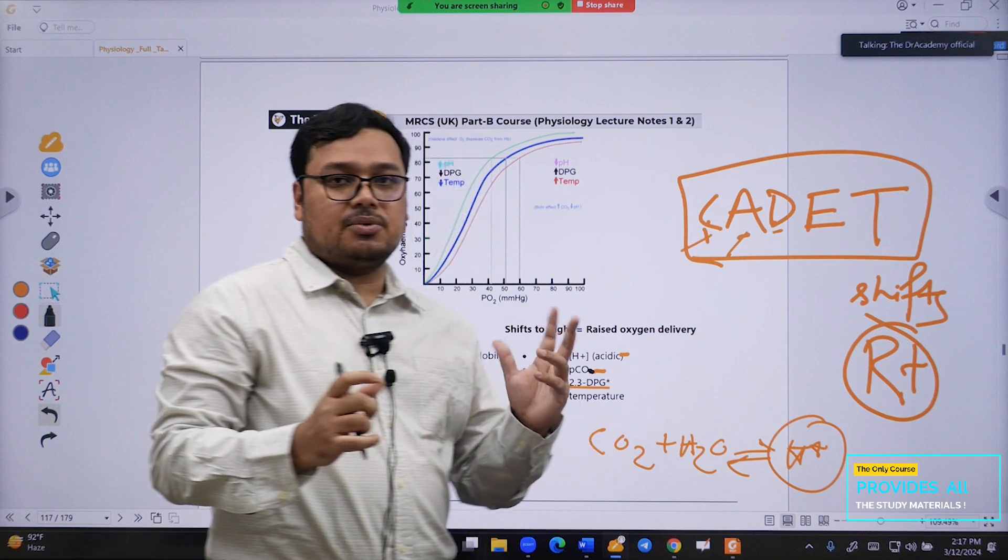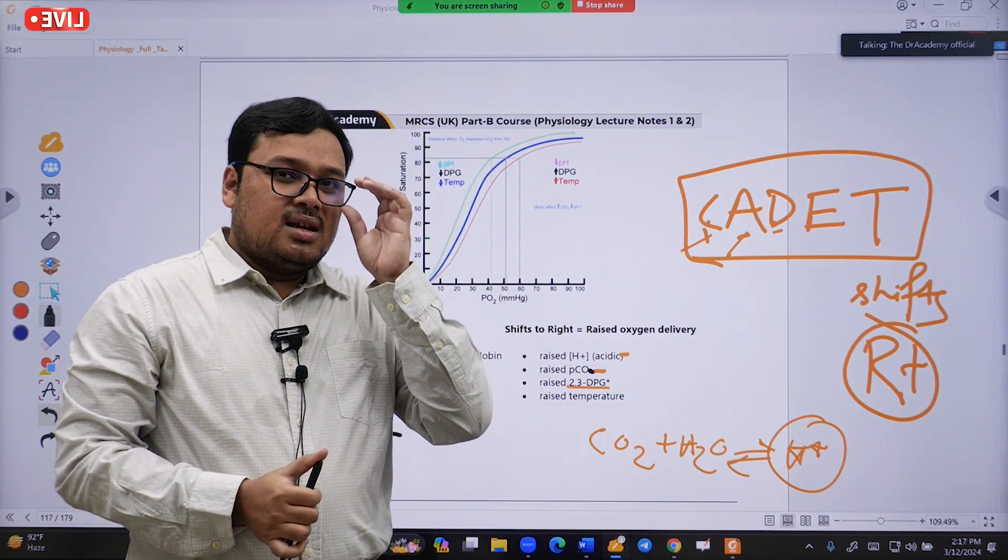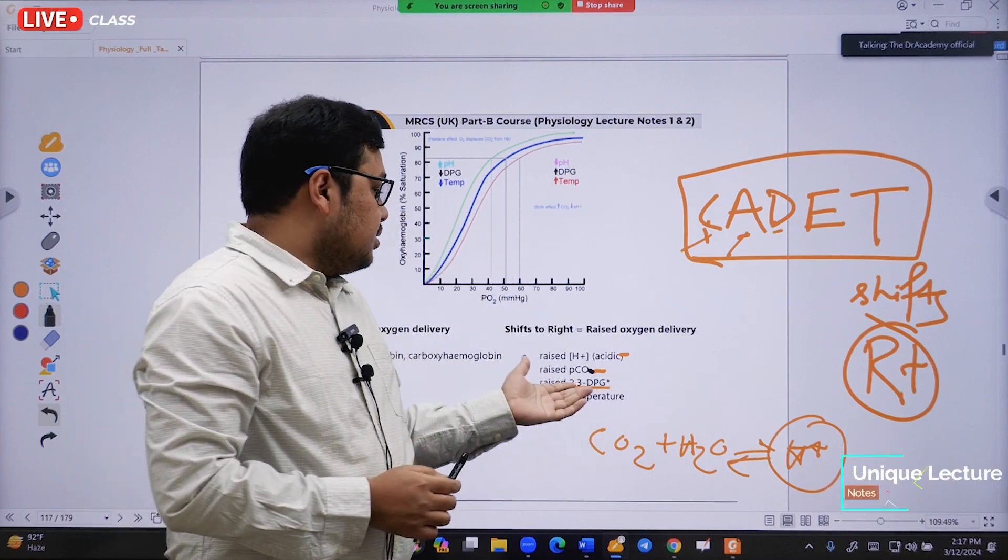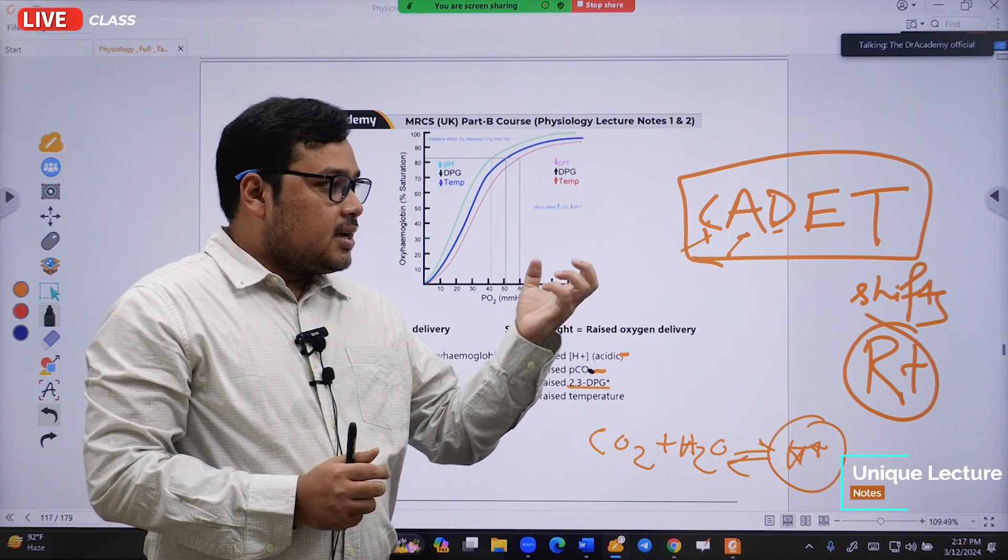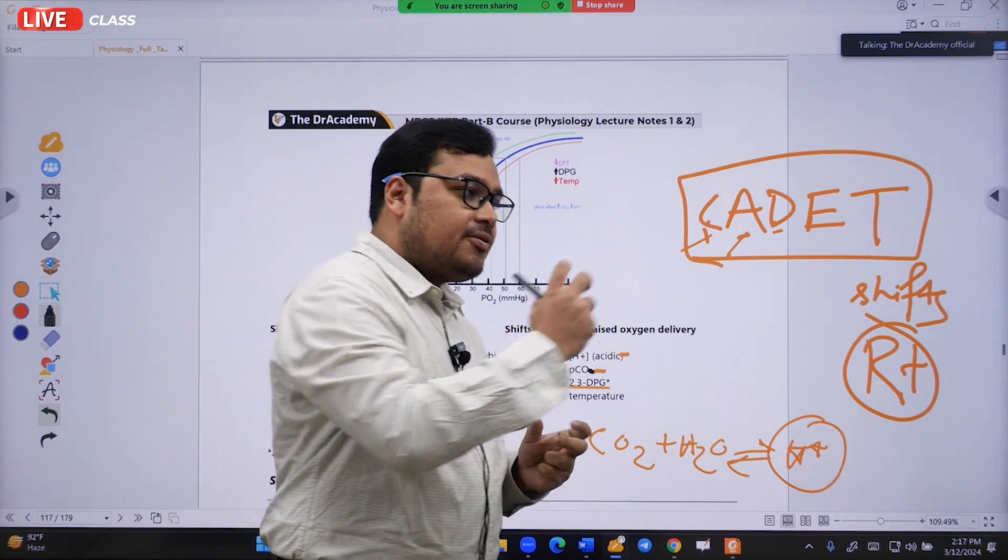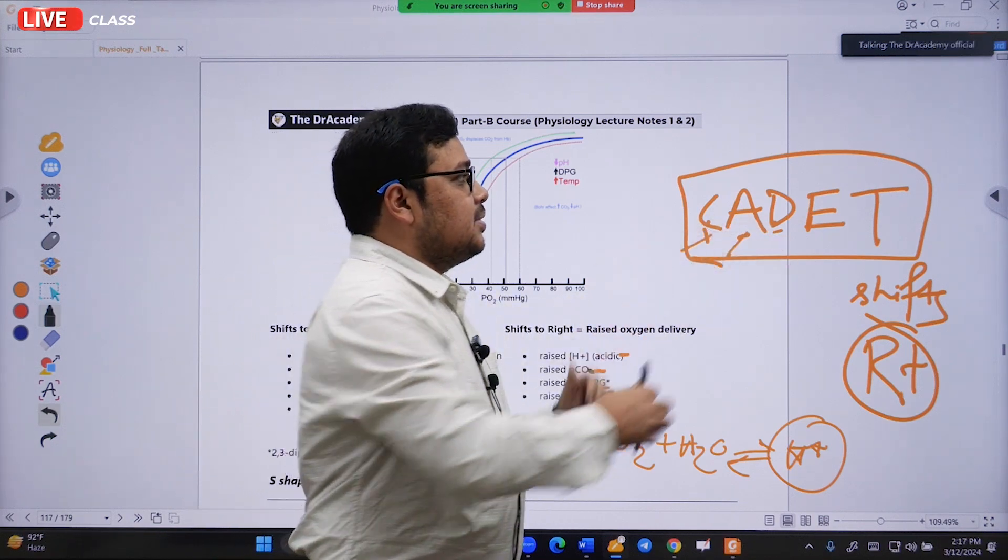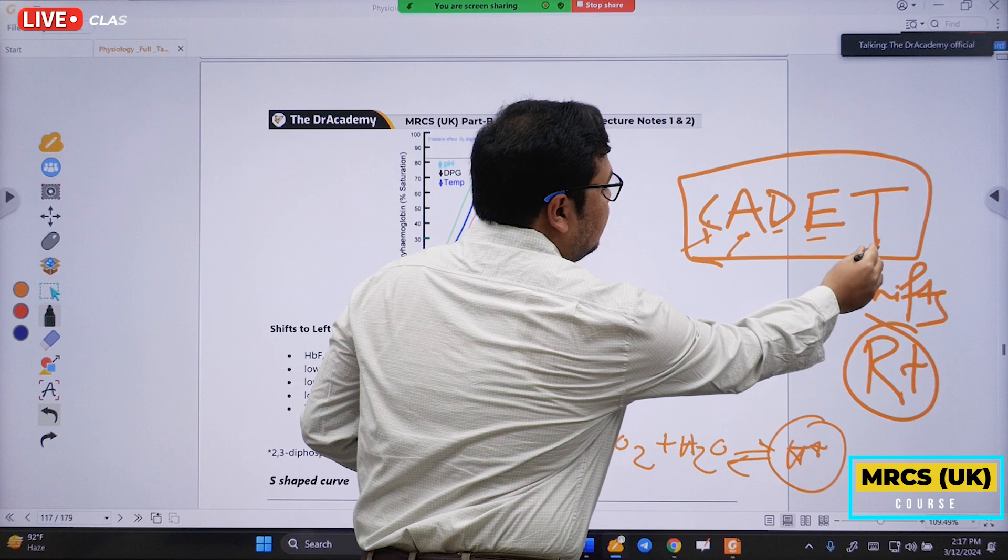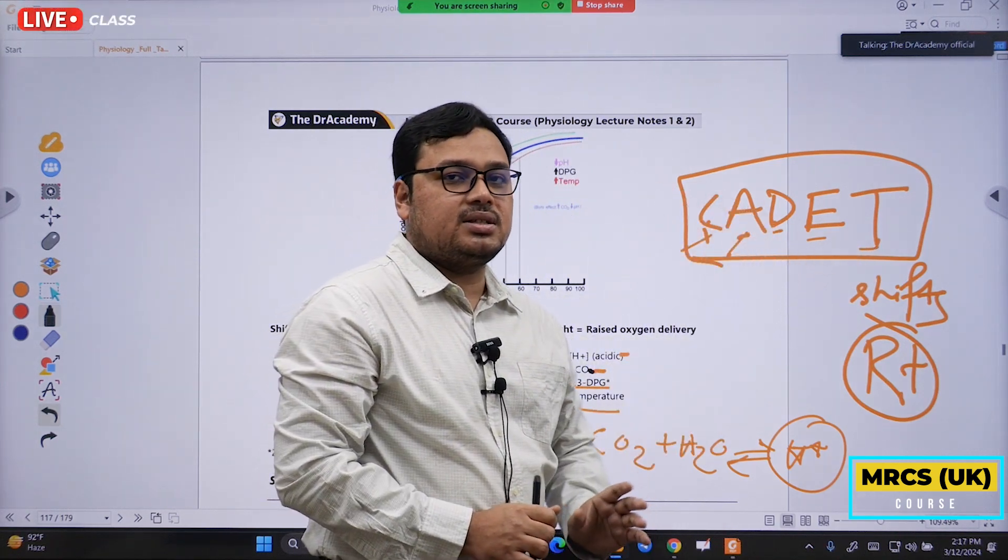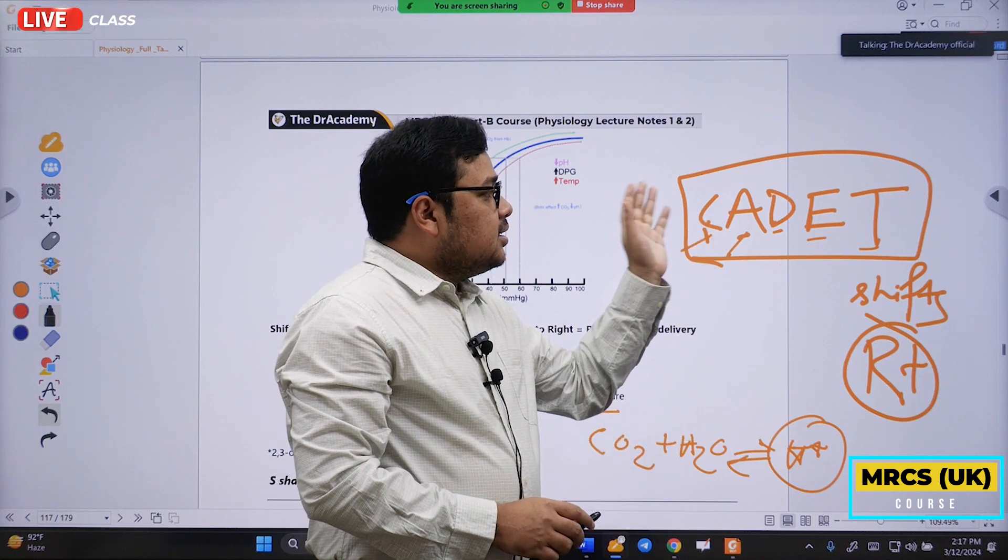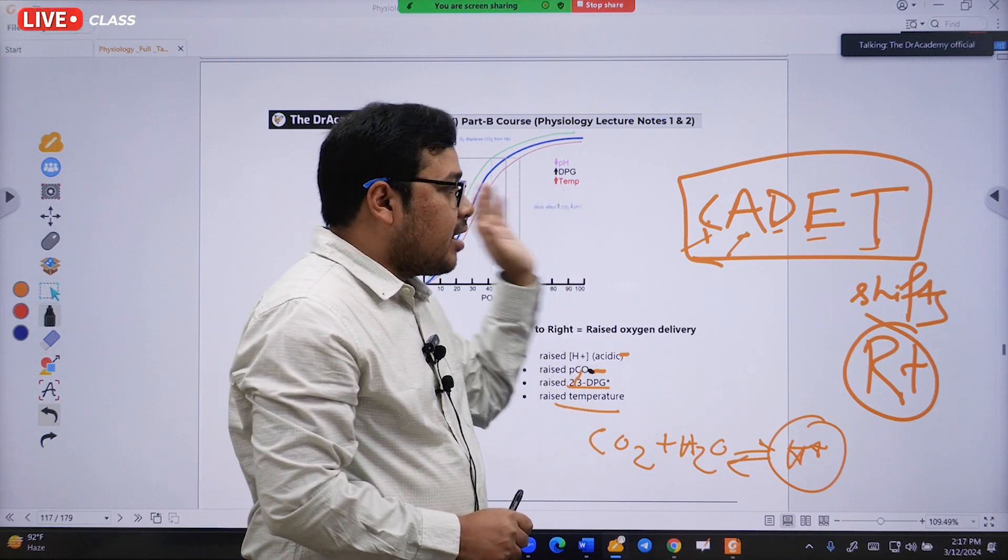2,3-DPG is a protein increased during exercise found in the musculature. Increased 2,3-DPG increases the release of oxygen from hemoglobin. E means elevated, and T for temperature. So raised temperature - this CADET - pushes the dissociation curve to shift to the right.